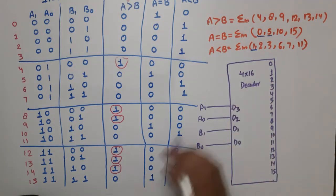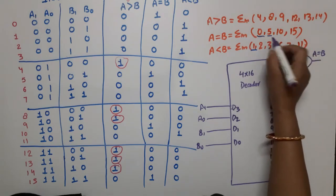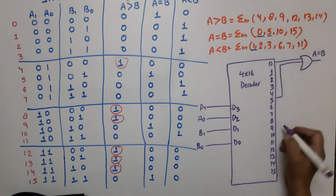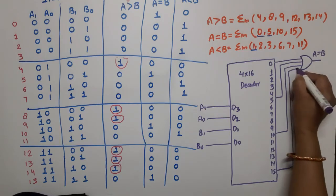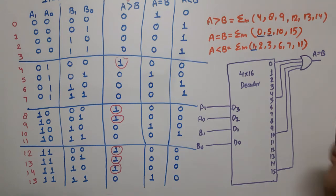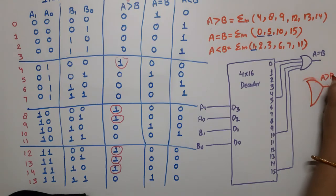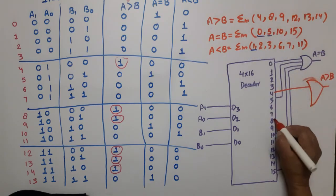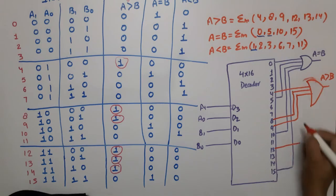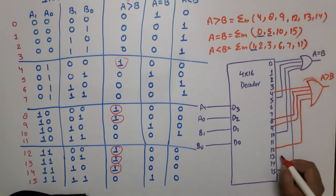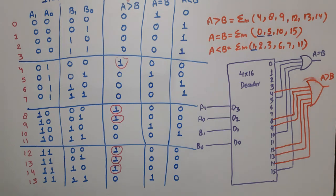Now one by one connections. For A equal to B, we connect outputs 0, 5, 10, and 15 through an OR gate. For A greater than B, we connect outputs 4, 8, 9, 12, 13, and 14 through an OR gate.